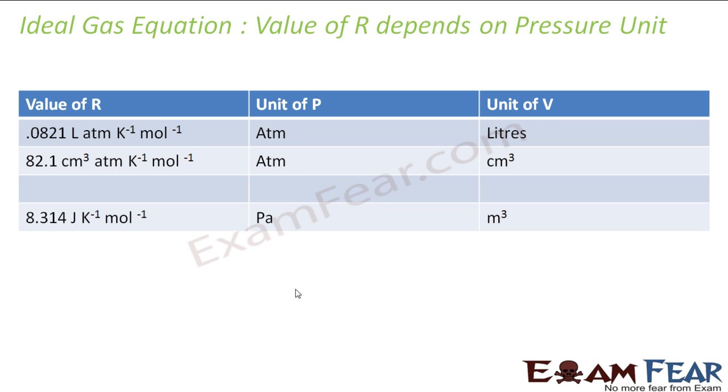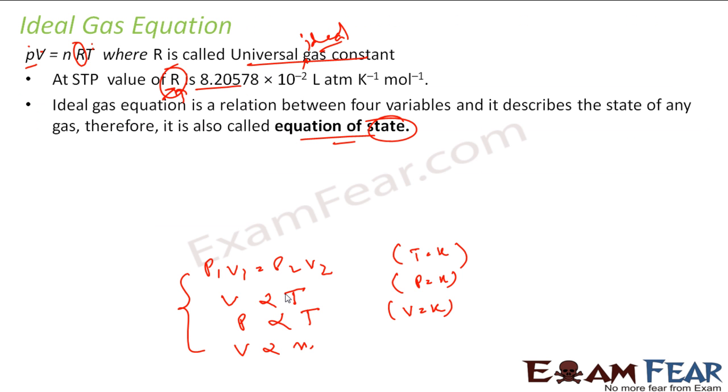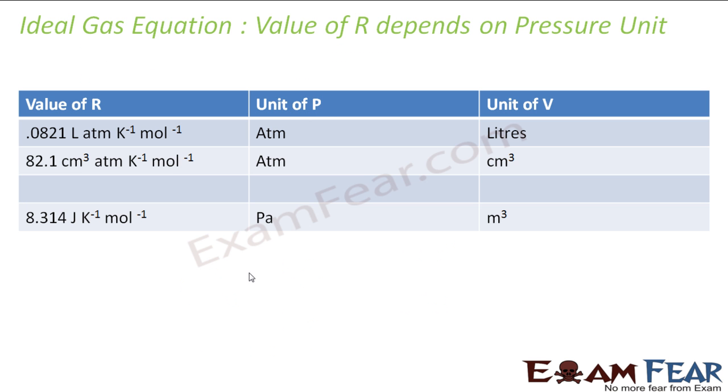So if you see, the value of R is different. The last slide we took was 8.2 times 10^-2 liter atm per Kelvin per mole. This is my STP because everything is standard. Liter in volume, pressure in atm. But if my volume is centimeter cube, I get this. So this unit depends actually more on the pressure.